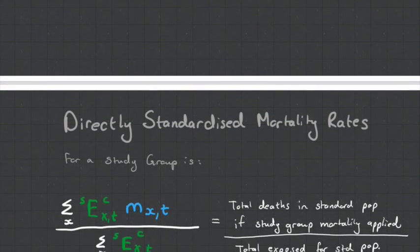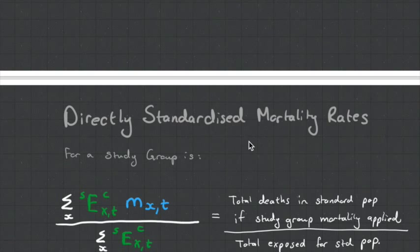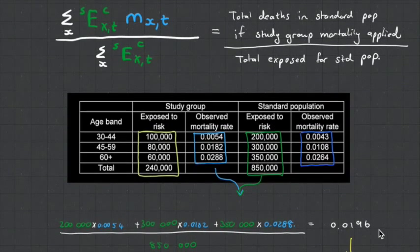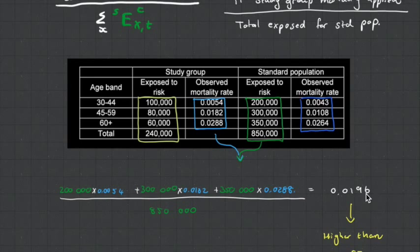One way you could do it is do a directly standardized mortality rate. This is where you use your observed mortality rates with the standard populations exposed to risk. So you use their age structure. What's great about this is now we're comparing apples with apples. Now the only thing we've changed has been the mortality rates, and we can get a more accurate crude mortality rate, and we see that it's higher.